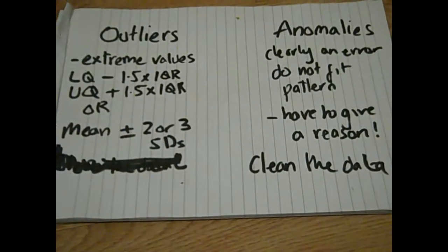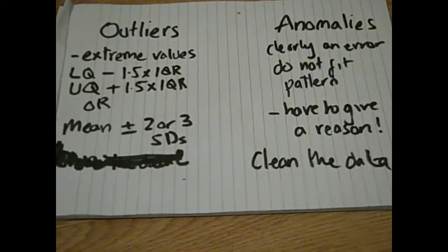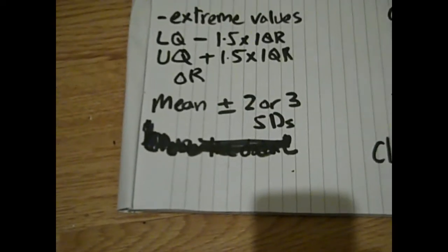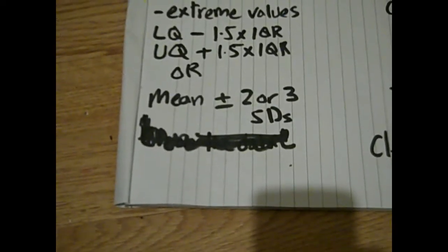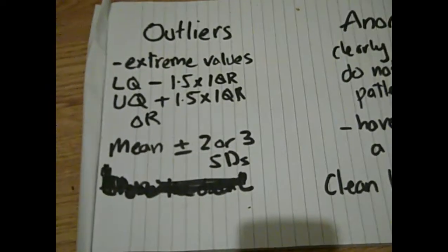Generally it's one of these: using the lower quartile, the upper quartile, and some multiple of the interquartile range, generally 1.5 times. The other one I've seen is mean plus or minus two or three standard deviations.